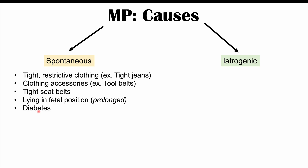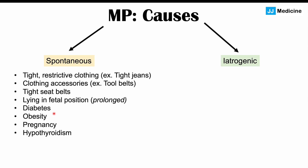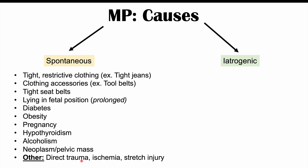Diabetes can cause Meralgia Paresthetica through diabetic neuropathy, which can cause nerve damage to multiple nerves including the LFCN. Obesity is another cause — a large abdomen or pannus hanging and compressing around the ASIS can cause this condition. Pregnancy is also a cause, as the larger belly and abdomen can lead to compression around the ASIS. This is why prevalence is higher in those two groups. Hypothyroidism can cause issues with neurological functioning in different nerves, including the LFCN. Alcoholism can cause neuropathy as well. A neoplasm or pelvic mass can also compress the LFCN.